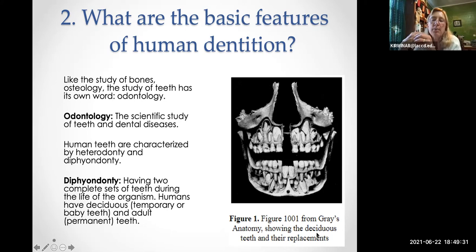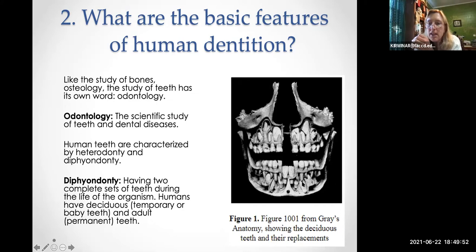Diphyodonty means that humans have two sets of teeth during our lives: our temporary or baby teeth, also called deciduous teeth, and our permanent teeth, also called adult teeth.